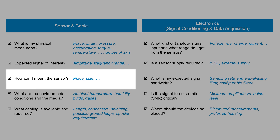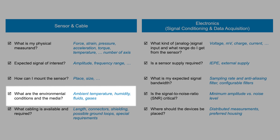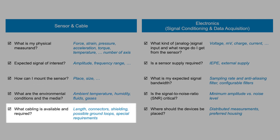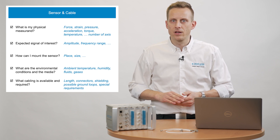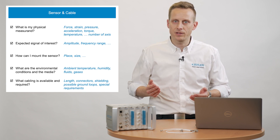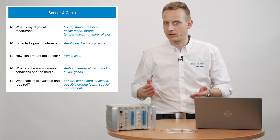Mounting — this is very dependent on the measurement. For example, with acceleration: how can I mount the sensor? Can I bolt it, or should it be bonded with wax? Then about ambient conditions: what is the expected temperature range? Are there fluids or gases which are potentially harmful for the sensor? Cabling may be very important, as mentioned before — not only the length and connectors, but also electromagnetic influences. Shielded cables or twisted pair for differential signals? Or the potential for ground loops?